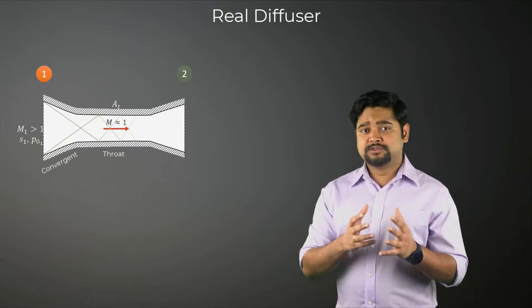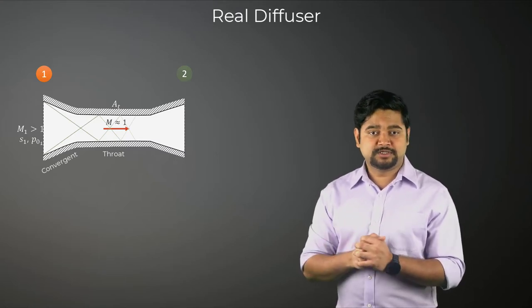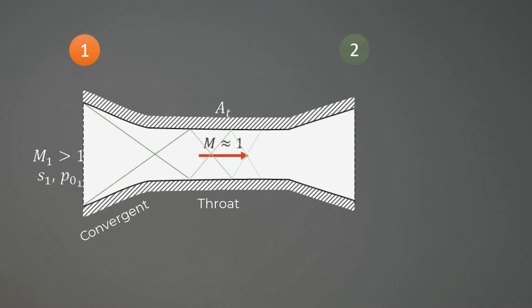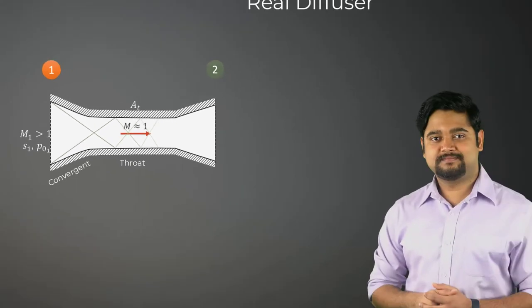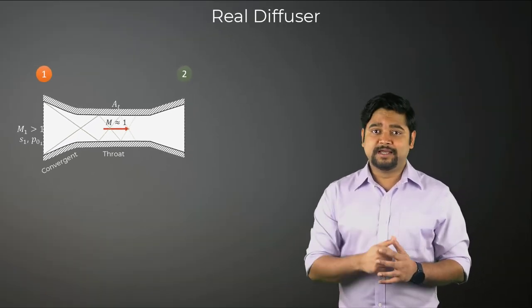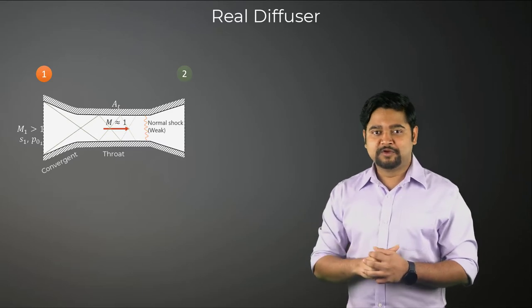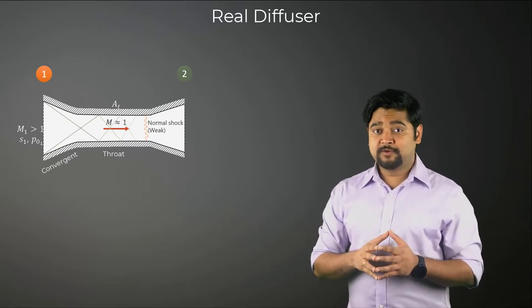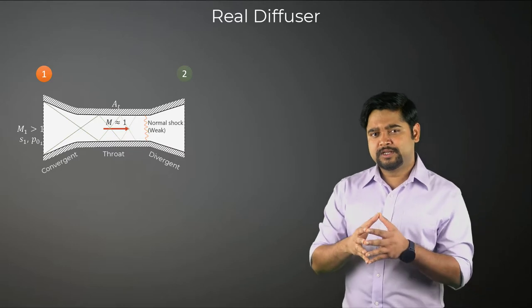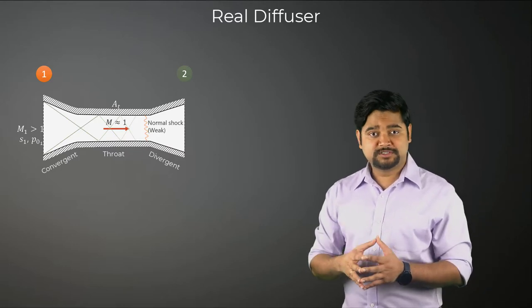The throat is usually in the form of a constant area section. The interaction of shock waves and the viscous flows near the wall weakens and diffuses the reflected shock patterns. Many times, it ends up in the form of a weak normal shock wave at the end of the constant area throat. The subsonic flow downstream of the throat is subsequently slowed down via a diverging section.